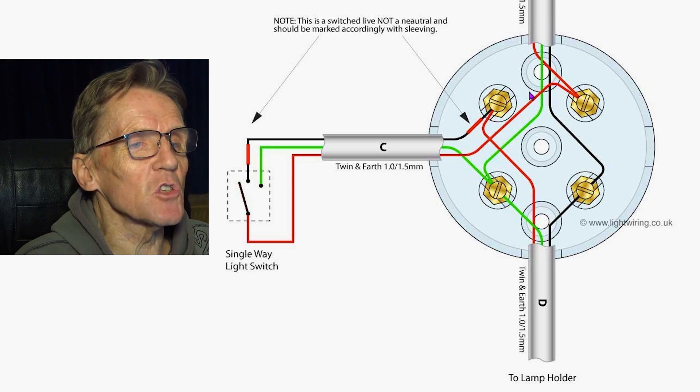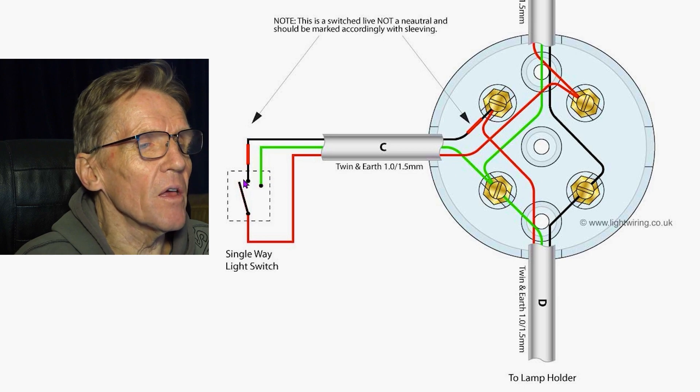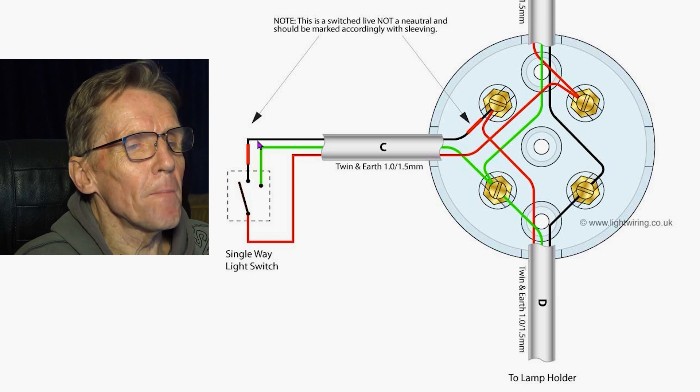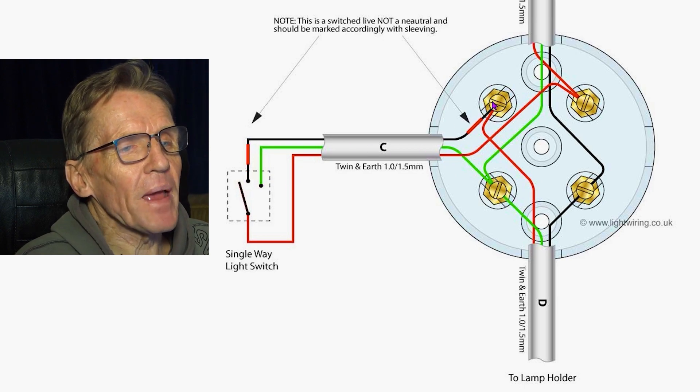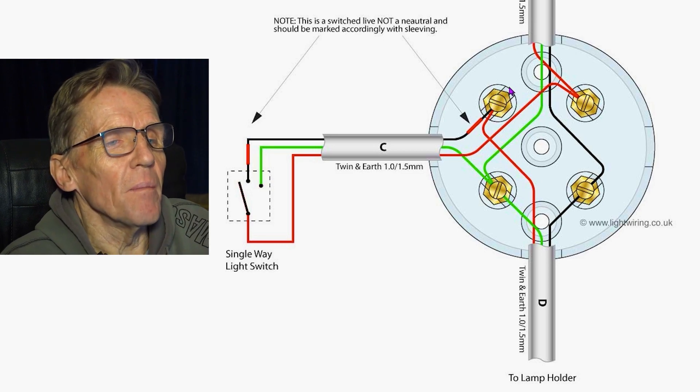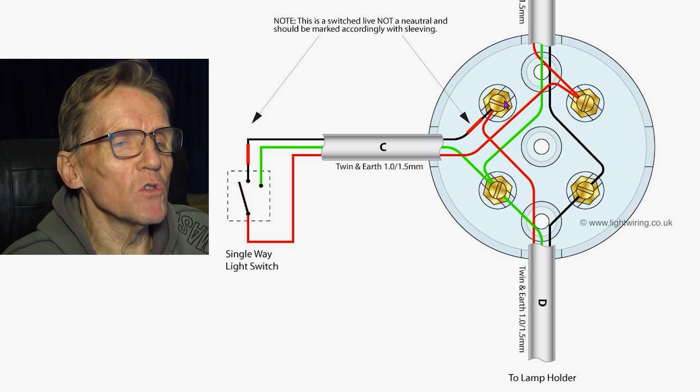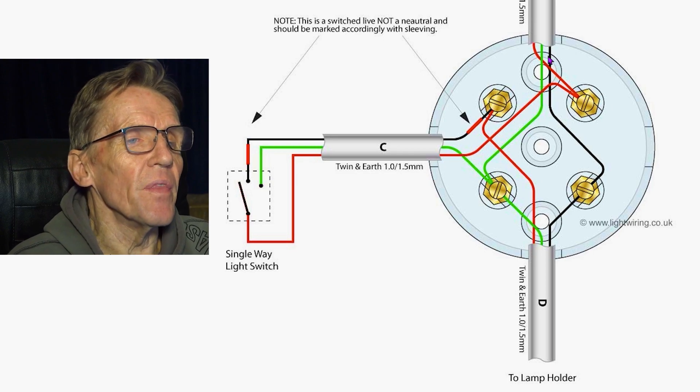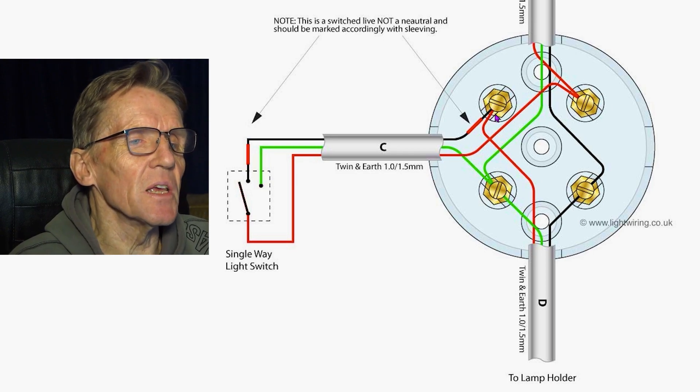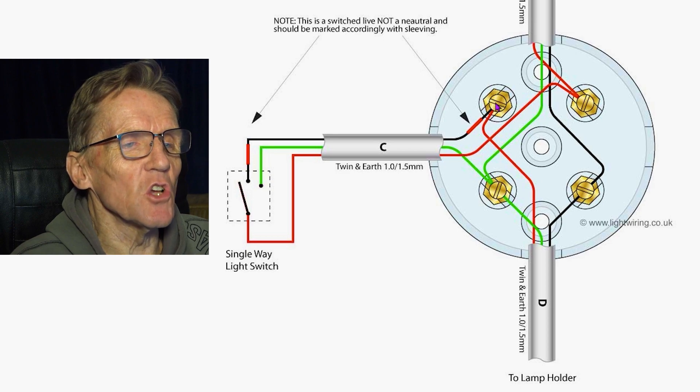Across the switch, back up, and back into what we call the batten holder, the rose, or whatever you want to call it—the junction box in the ceiling that has these terminals in it.